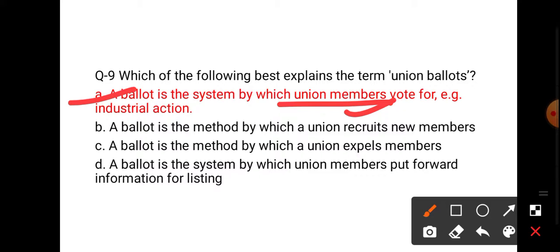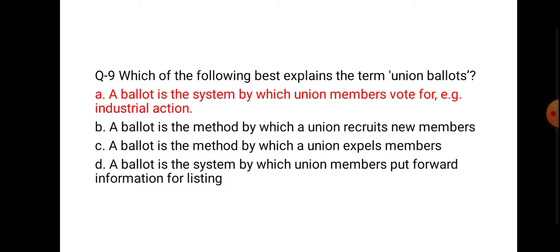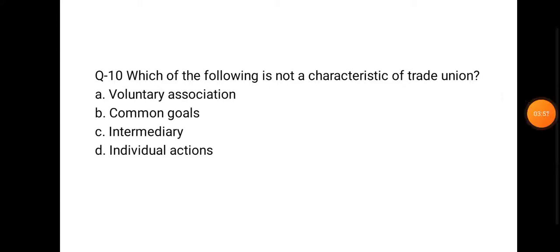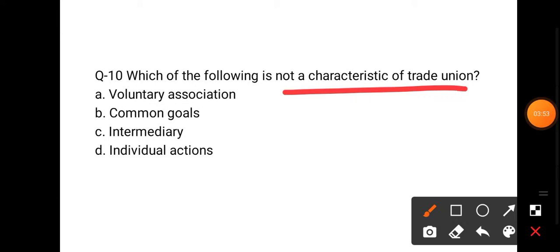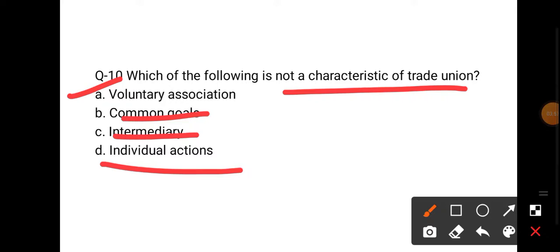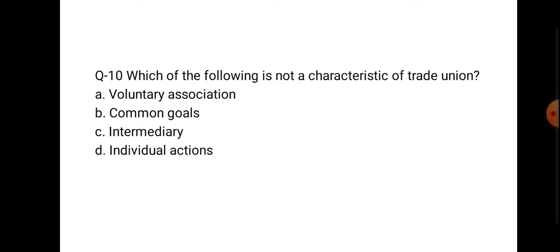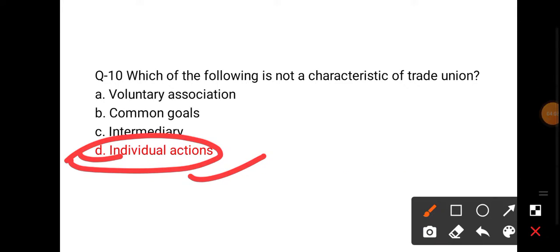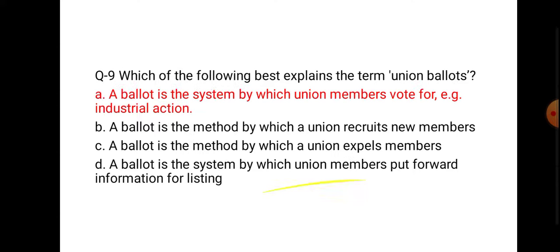The tenth question: Which of the following is NOT a characteristic of a trade union — voluntary association, common goal, intermediary, or individual action? The answer is individual action. Individual action is not related to trade unions because a trade union defines collective action — sab ko lekar chalta hai.